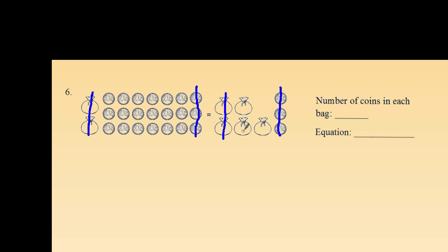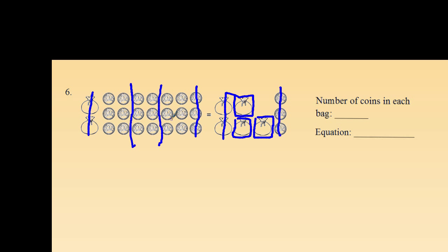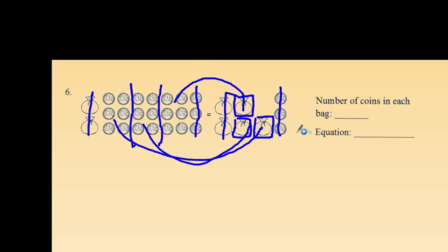Since I don't know how many coins are in each bag, I can't take away coins from each side to keep it balanced, so I have to think differently. What if I divided these 3 bags into 3 equal groups, so that each group has just 1 bag? And since I divided the right side into 3 groups, I've got to do the same on the left side — take these 18 coins and divide them into 3 equal groups, which means 6 coins in each group. So each bag has to have 6 coins. We've solved our problem — the number of coins in each bag is 6, and we did it using the picture.